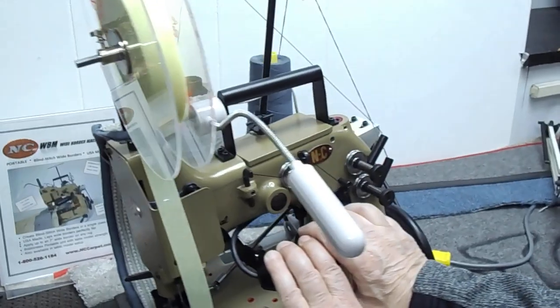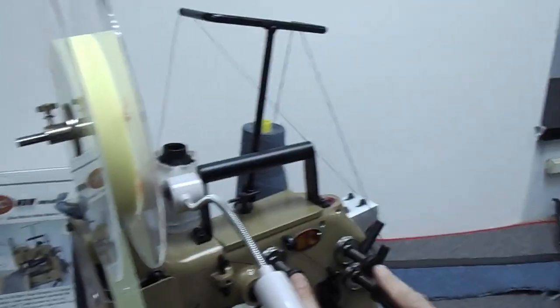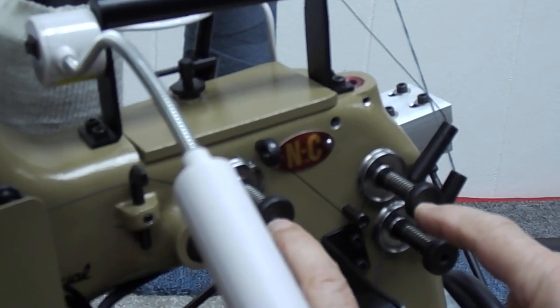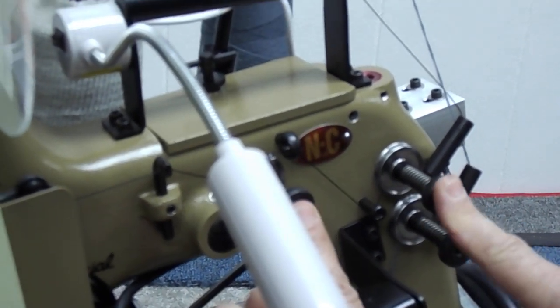On all NC portable sergers or table model sergers, the tension nuts should be flush with the end of the post. That is an excellent starting point. This is the post in the center of each tension nut for the needle thread, and they should both be flush.